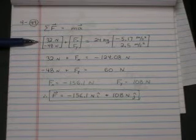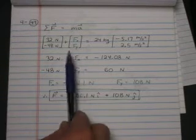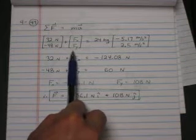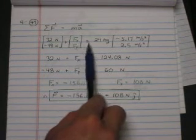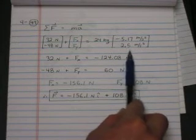So, here's F. It's 32 newtons and negative 48 newtons. That's the first force. Plus, here's what we're trying to solve for. F of x and F of y of the second force. Equals mass times acceleration. 24 kilograms times, and here's your acceleration vector.